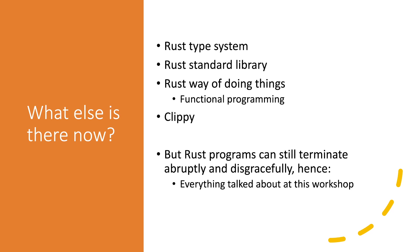The Rust type system is a wondrous thing. The Rust standard library, its functional library, the whole Rust ecosystem, the Rust way of doing things, Clippy and all of that — means that when you're writing Rust code you're not really writing a lot of the classical bugs you see in C++. It's not a huge bug fest that static analyzers for C can have. C is kind of your best case as a static analyzer writer — there are gold nuggets lying everywhere, about 15 bugs every 10 lines. Rust is not like that. But even so, Rust programs can still terminate abruptly and disgracefully. Hence this workshop.